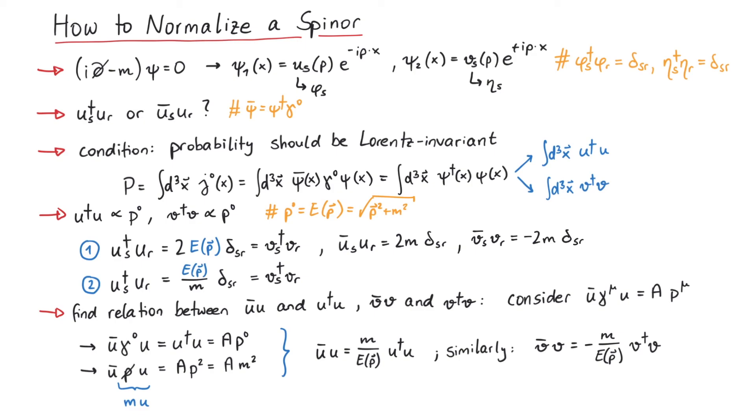Using the second convention, we have u dagger u and v dagger v equal to energy over mass, which makes u bar u equal to 1 and v bar v equal to minus 1.